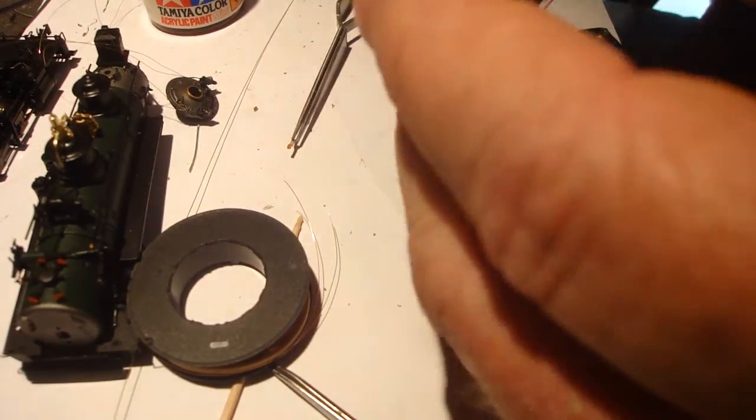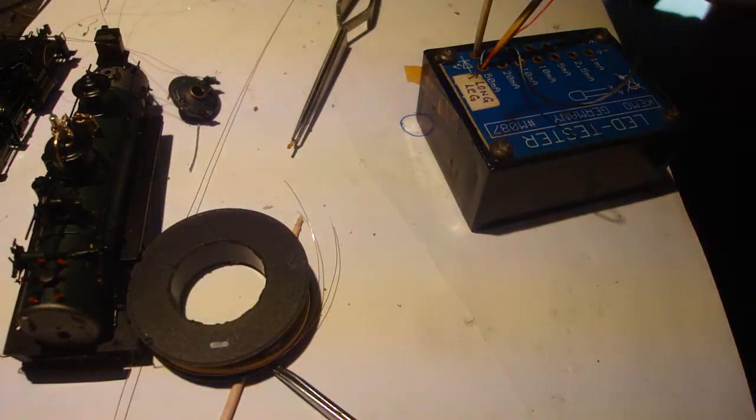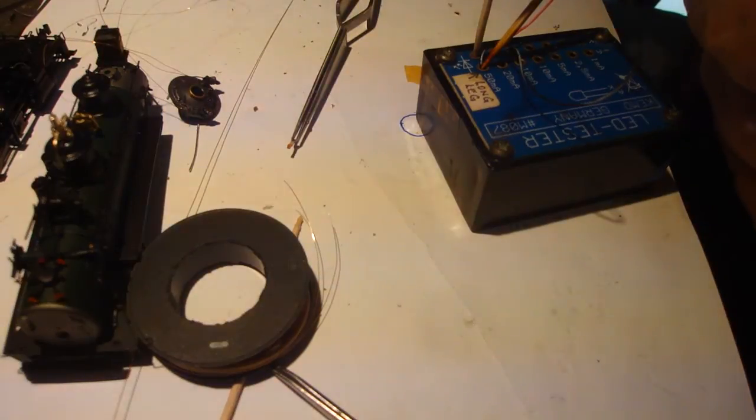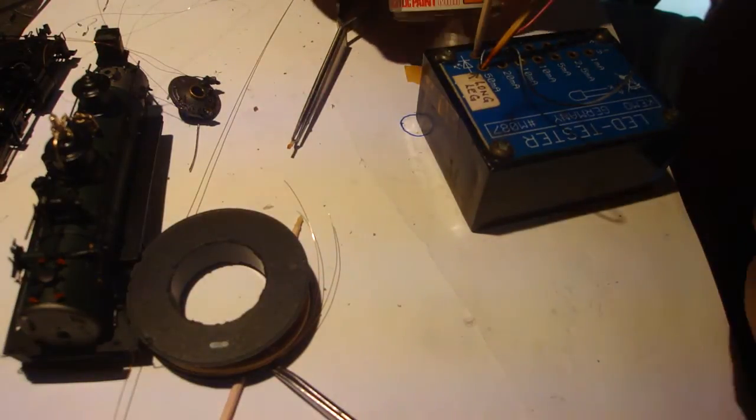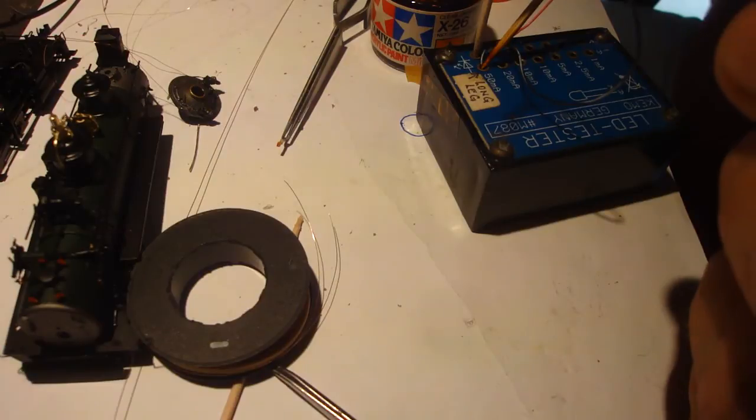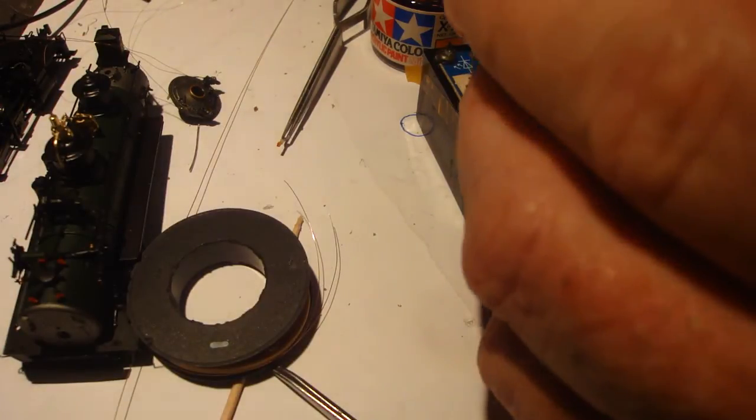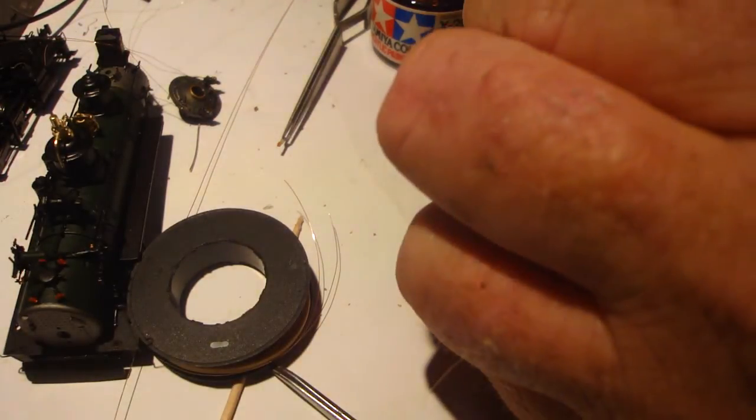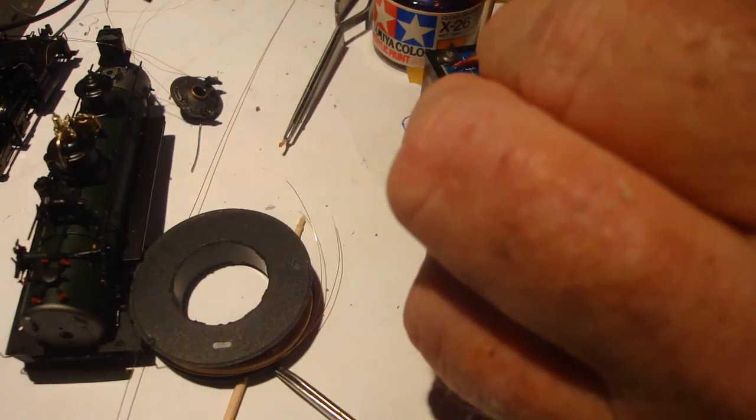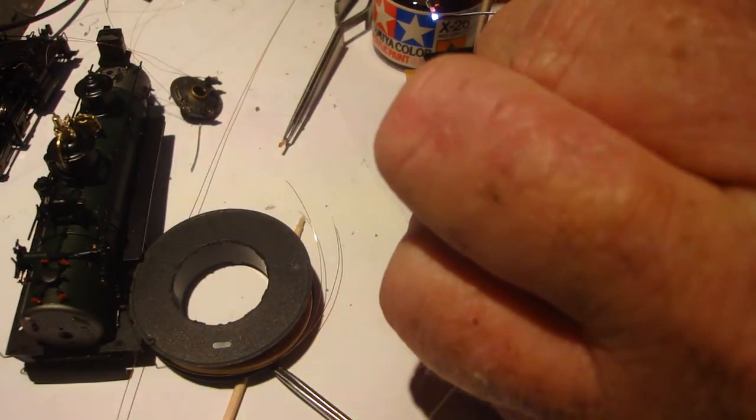Now what I'm going to do with that then is get some Tamiya paint. Some of this orange X26. The clear paints that I use. I use the yellows and that. So I want to hide that white. Let's just come out. And we'll just color it.